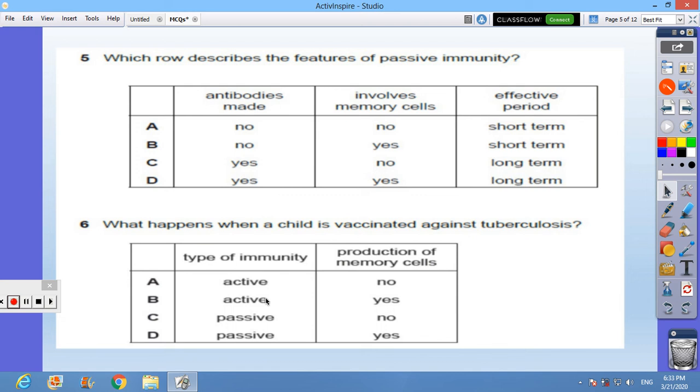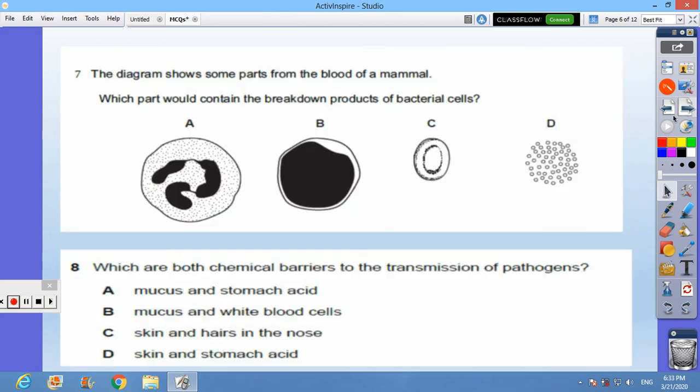is active and he does produce memory cells. Question 7: the diagram shows some parts from the blood of a mammal. Which part would contain the breakdown products of bacterial cells? Should be A, the one which engulfs the bacterial cell.